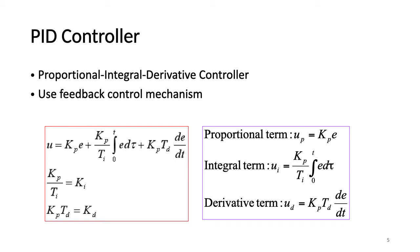A derivative term itself cannot bring the error to zero — it acts on the rate of change of error trying to bring that rate to zero. If the control error is increasing, dE/dt is positive and the total control signal increases by U_D; if decreasing, dE/dt is negative and the total control signal decreases by U_D. It is fast, but the main problem with derivative control is that it amplifies random measurement noise and causes large variations in the control signal. Special forms include the P controller and PI controller, representing the proportional and proportional-integral controllers.